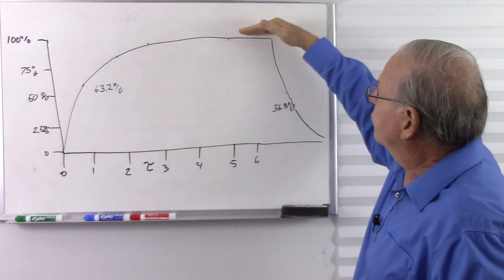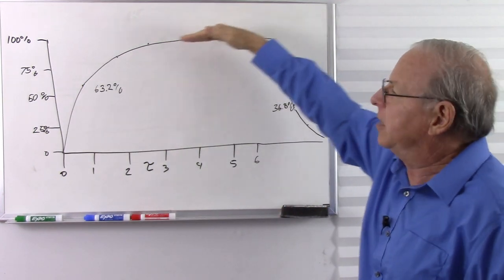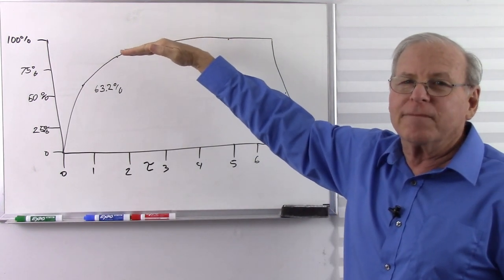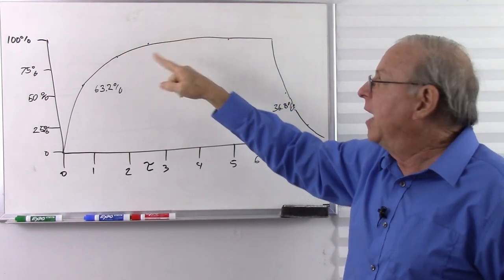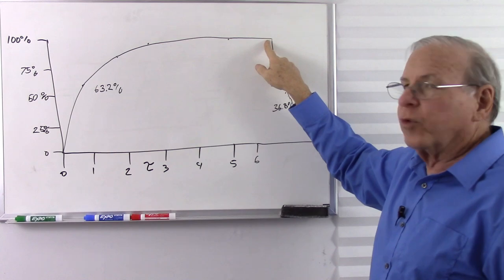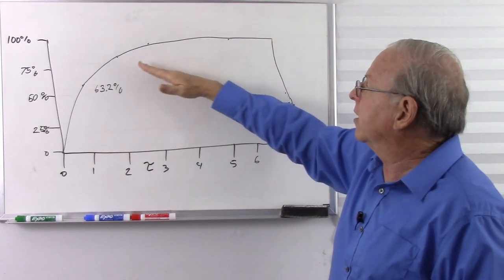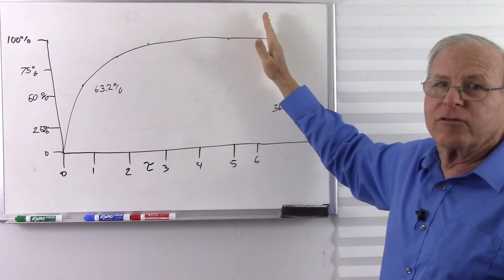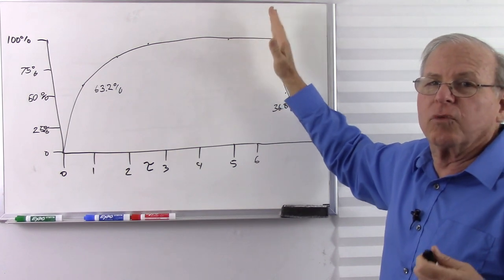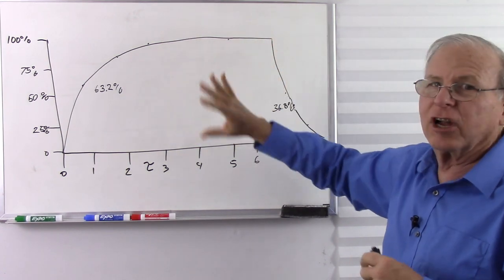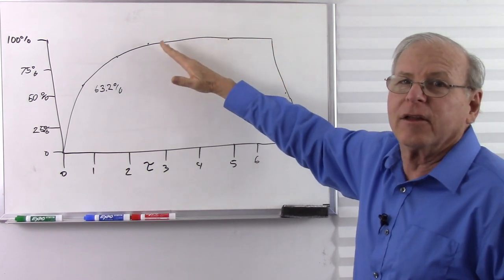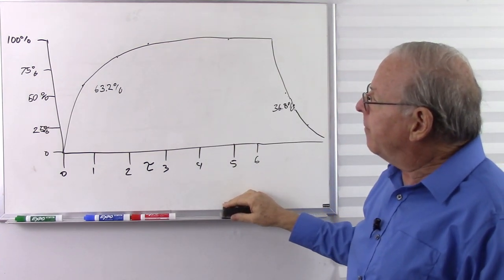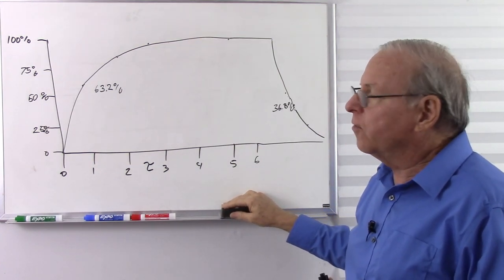It doesn't always have to take this shape — the capacitor could stay flat lined for any amount of time: minutes, hours, whatever. The discharge curve starts when I start the discharge, not at any fixed relationship to the charge. So that's what happens with the voltage. Now, what happens with the current?